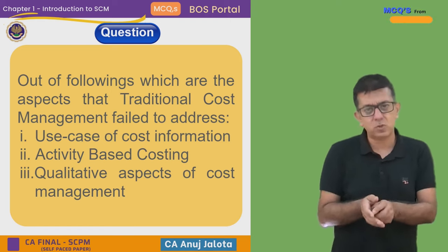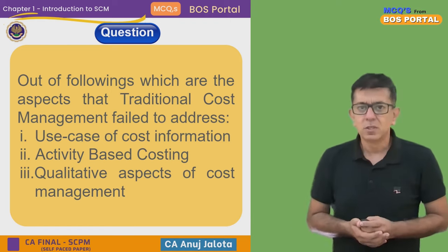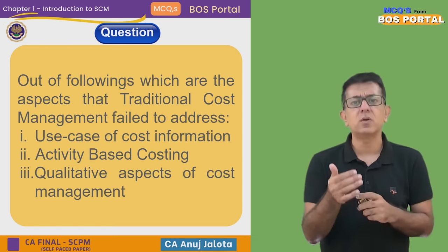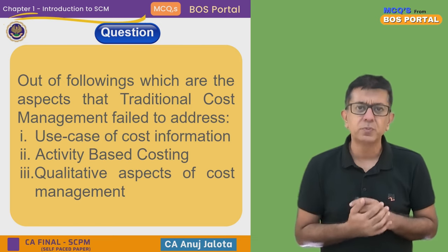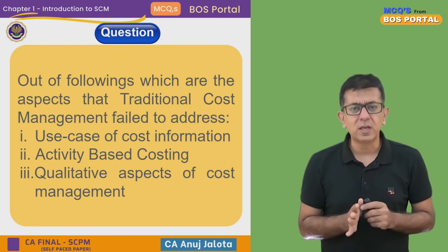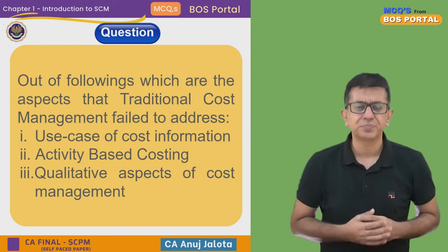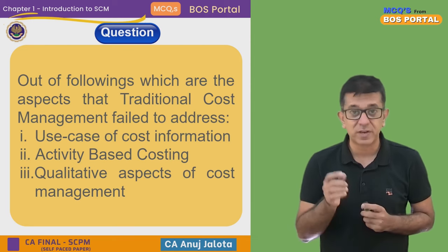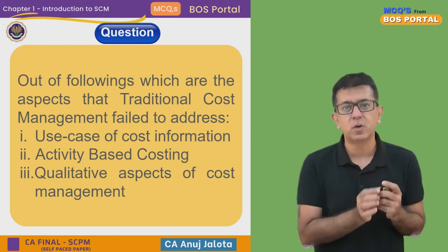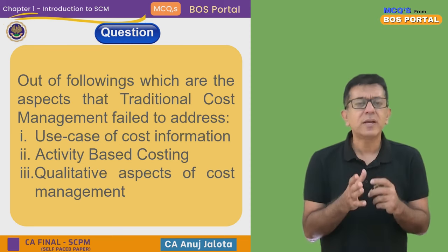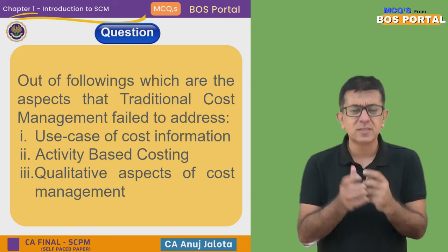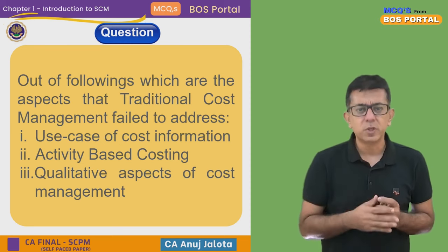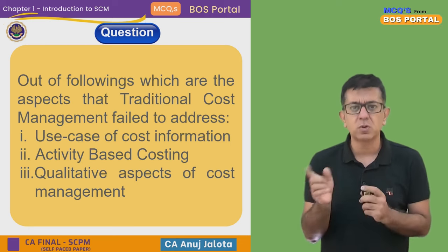For example, suppose your material cost is five rupees — it tries to control that cost and bring it down. It would implement standard costing and find variances. If the variance is adverse, that means we need to be controlling our cost. You should have incurred five rupees but incurred 5.5 — traditional cost management will say you have incurred more costs.